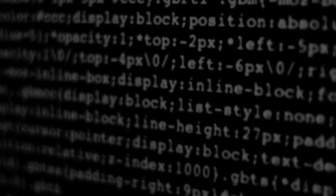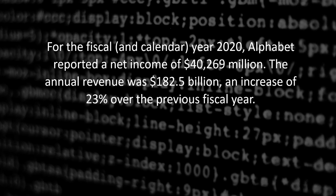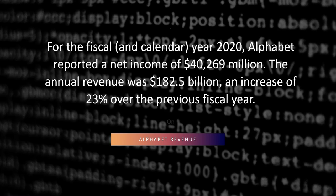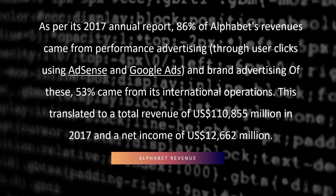For the calendar year 2022, Alphabet reported a net income of 40,269 million dollars. The annual revenue was 182.5 billion dollars, an increase of 23 percent over the previous fiscal year. As per its 2017 annual report, 86 percent of Alphabet's revenue came from performance advertising and brand advertising, and 53 percent came from its international operations.